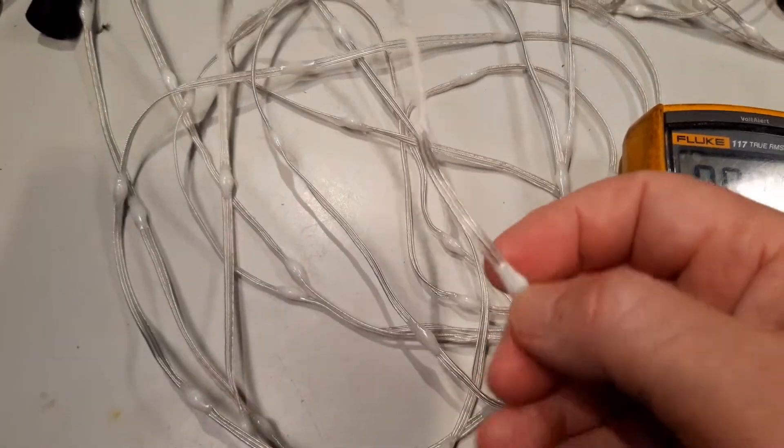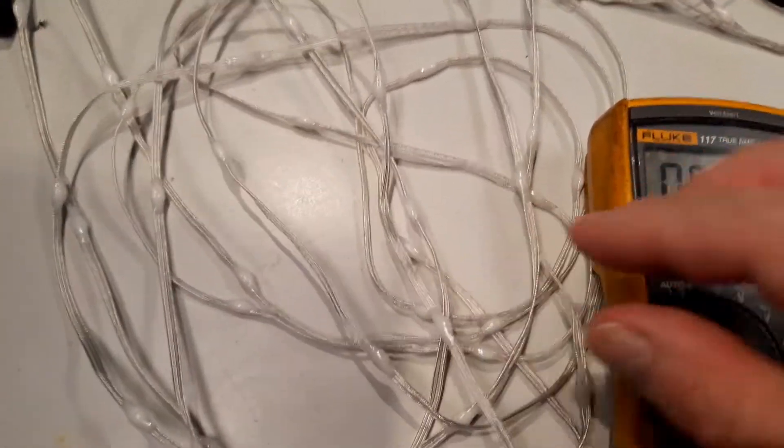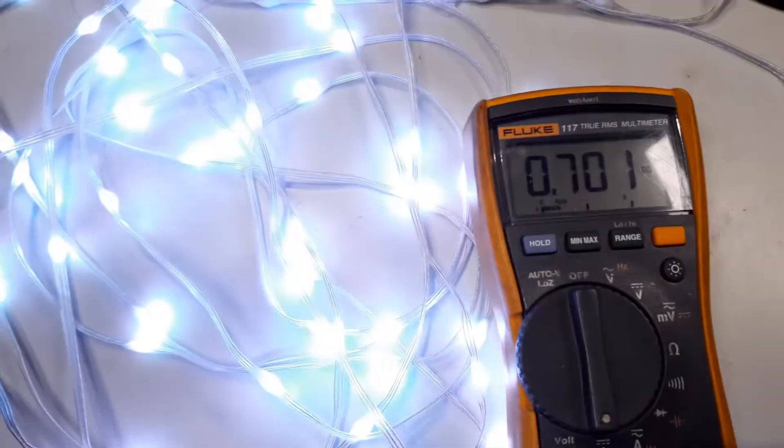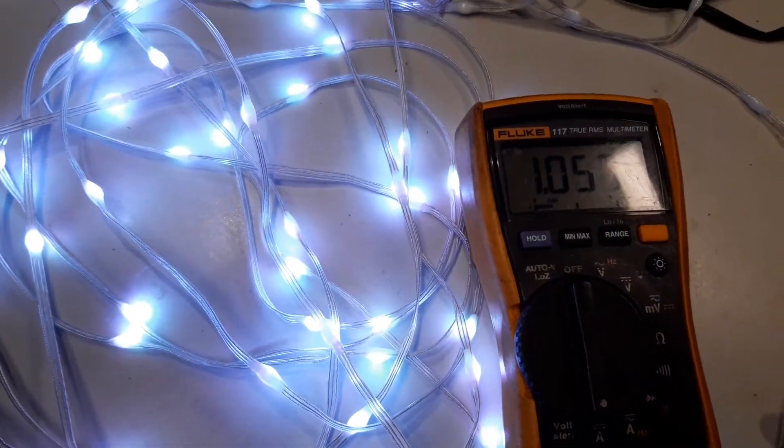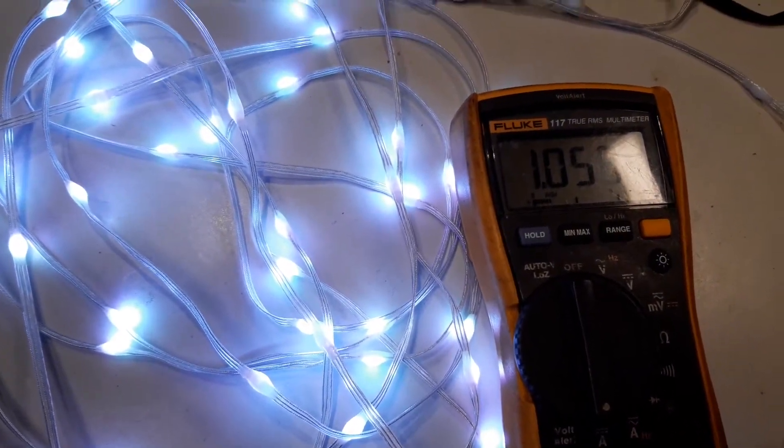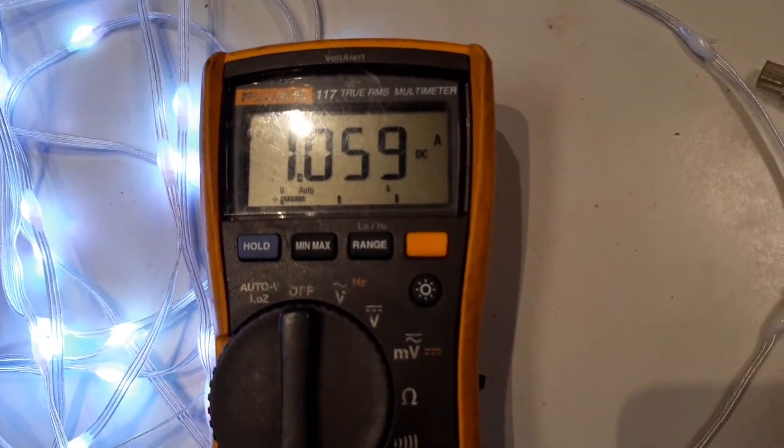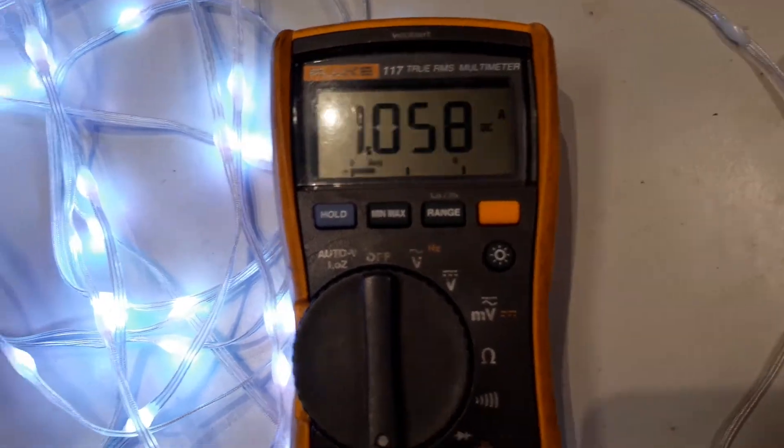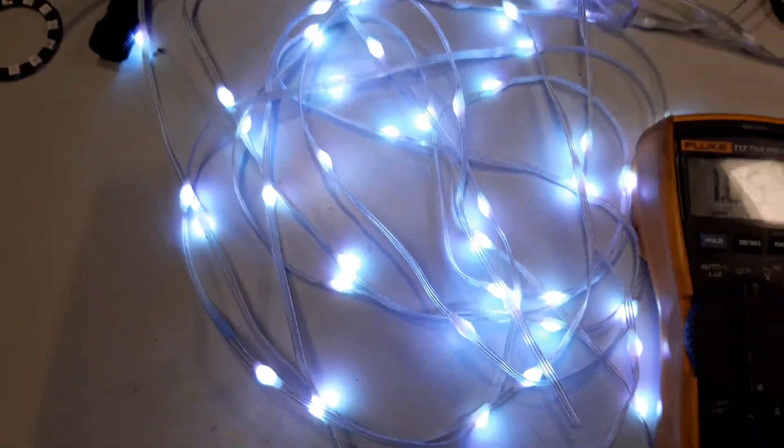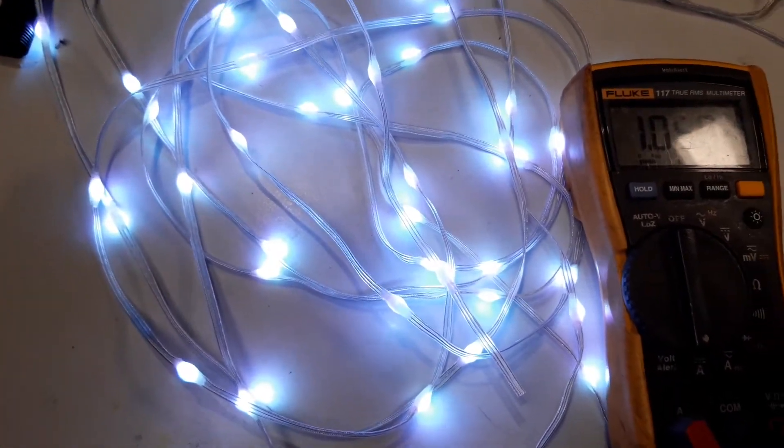They do still put out some light from the back but it's mostly from the front. It's not a total shadow though. I'll just turn those on. I've got the current meter in series. This is a string of 50 that I've chopped off the roll they sent me.